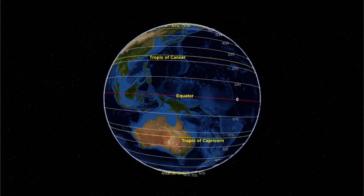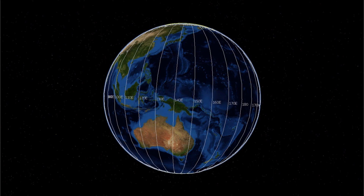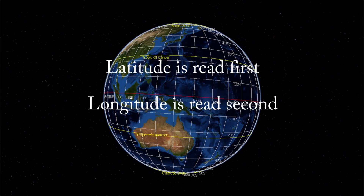The Earth is divided up into horizontal lines of latitude and vertical lines of longitude. Latitude is read first, longitude second.